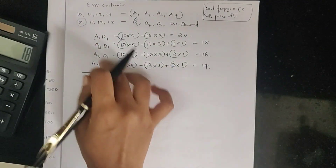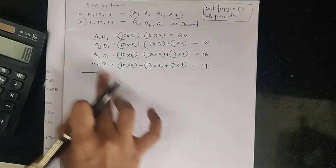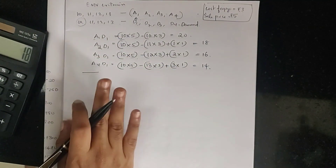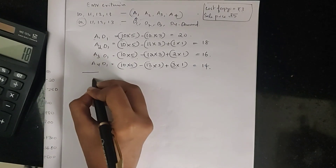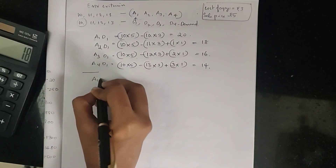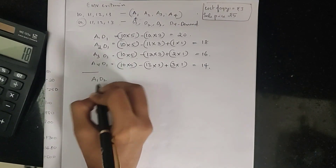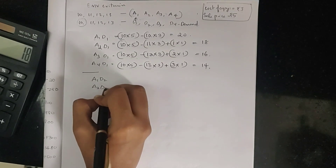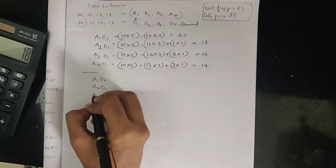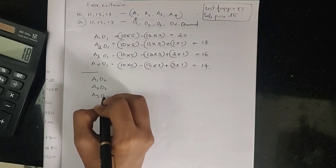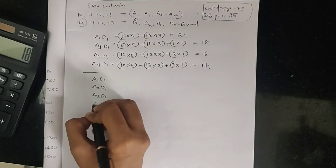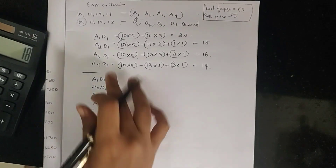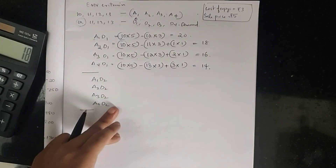Now we calculate the payoffs for demand 2 (D2): alternatives A1D2, A2D2, A3D2, and A4D2.